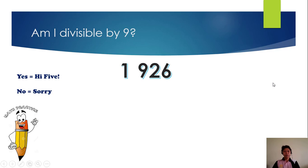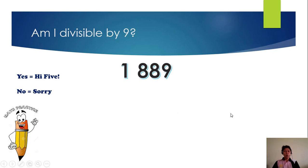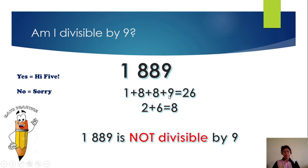1,926. So 1 plus 9 is 10, 10 plus 2 is 12, plus 6 is 18. In case you do not memorize the multiples of 9, you just continue with the process: 1 plus 8 is 9, and 9 is divisible by 9. So it is 'high 5.' Let's continue: 1,889. So 1 plus 8 plus 8 plus 9 is 26. 2 plus 6 is 8. It is not divisible by 9, so 'sorry.'